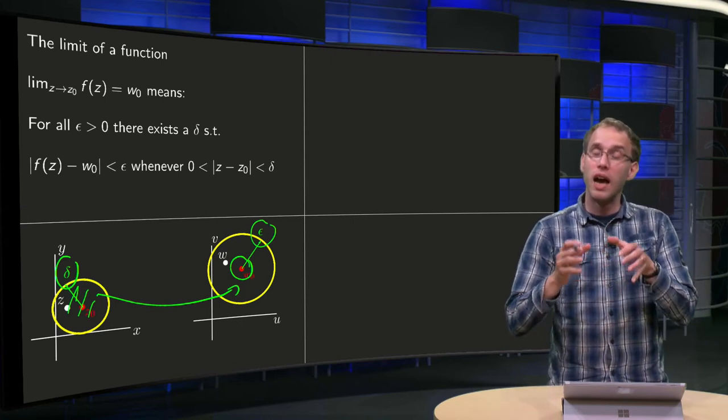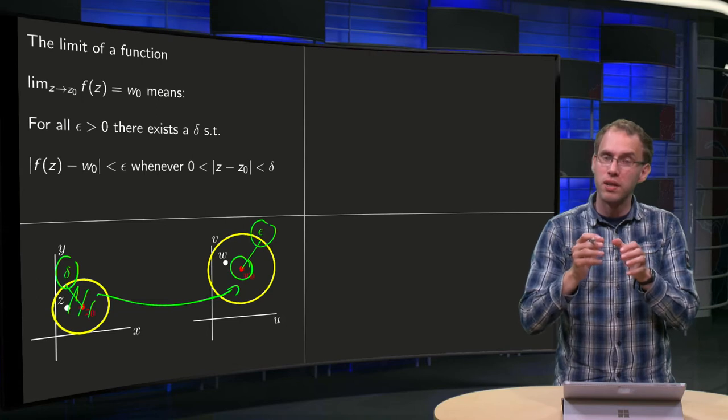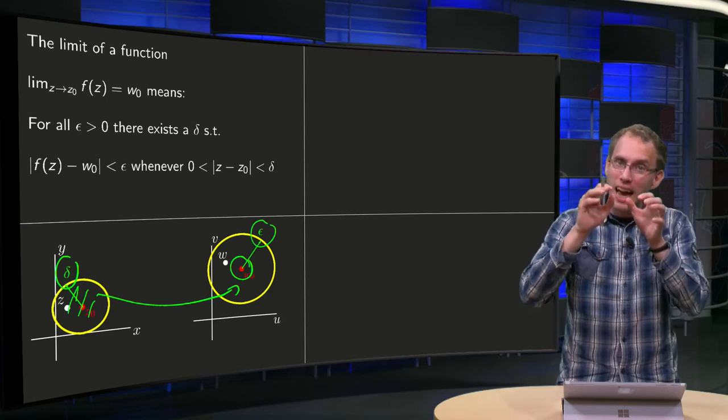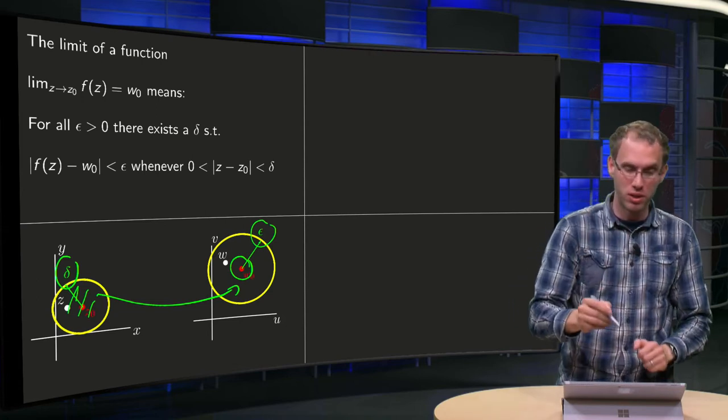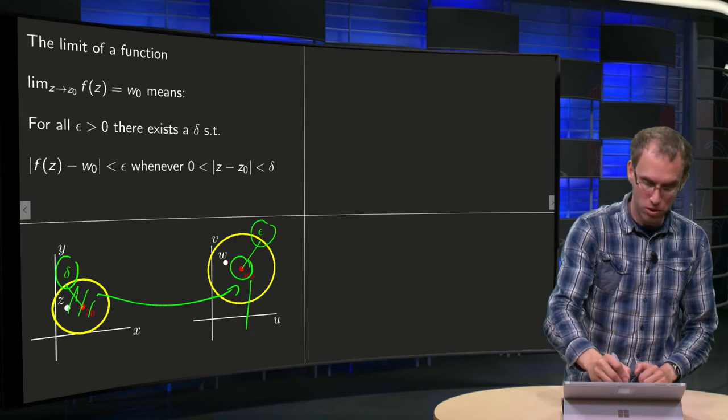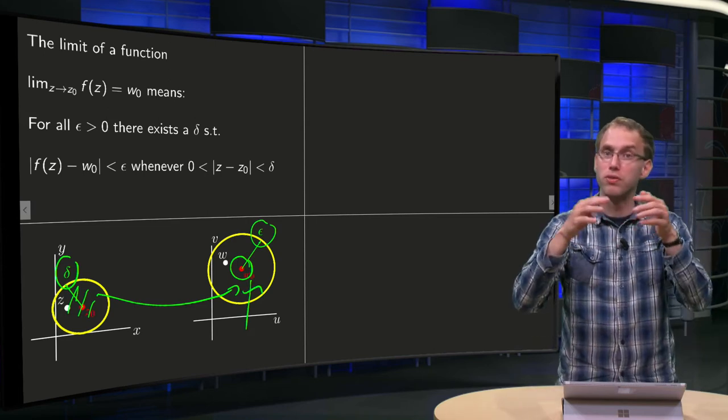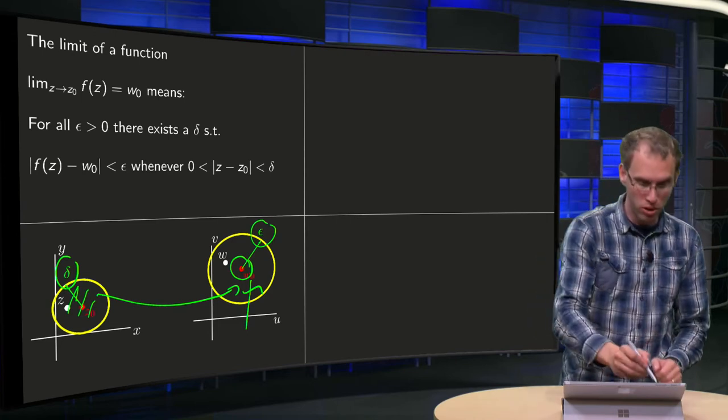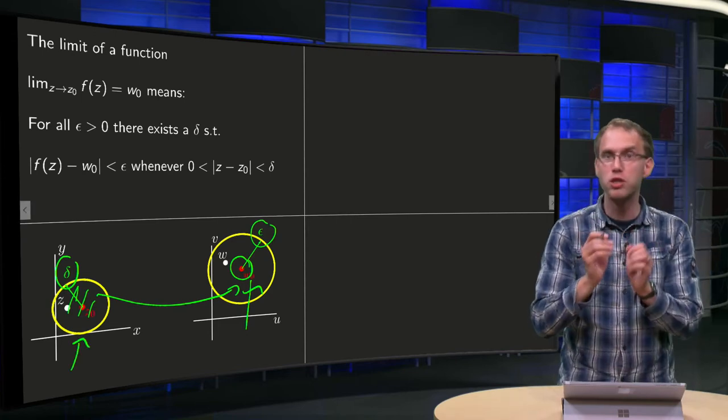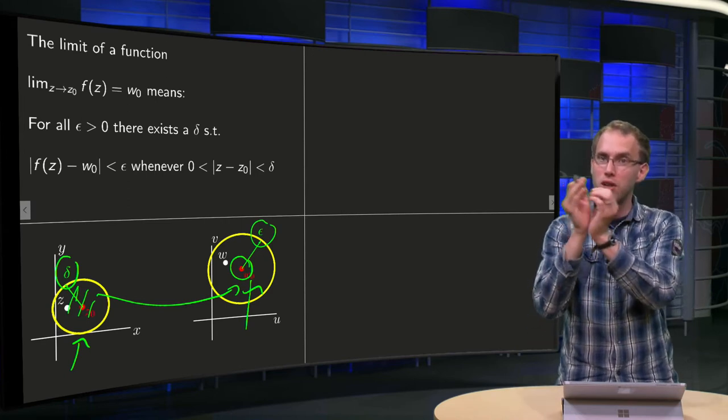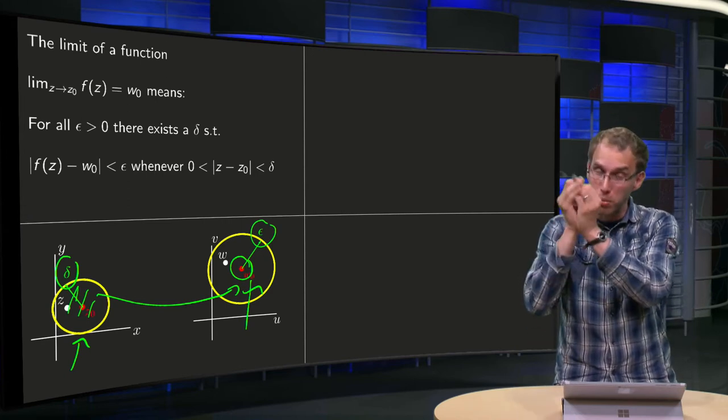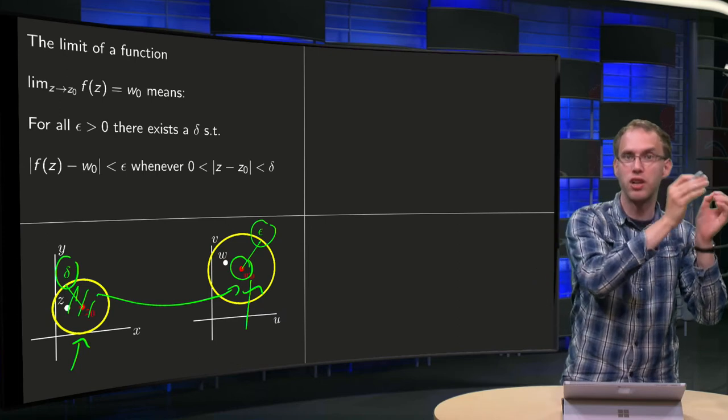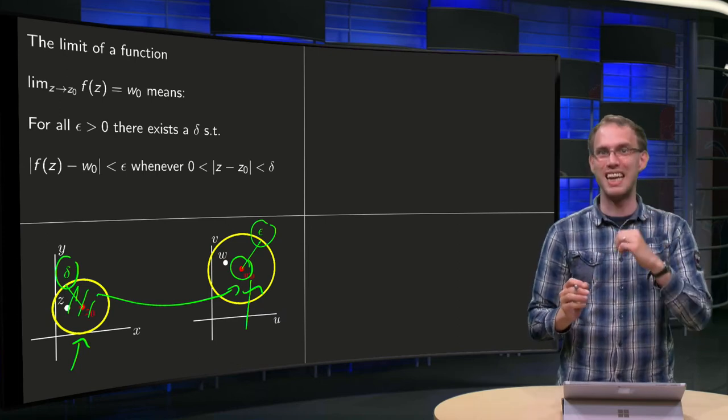Because you can get as close as you want to the point w₀ with all your function values w, provided you chose the circle over here, your domain, small enough. So you can get as close as you want to w₀, provided your z's are very close to z₀. That's what the definition says.